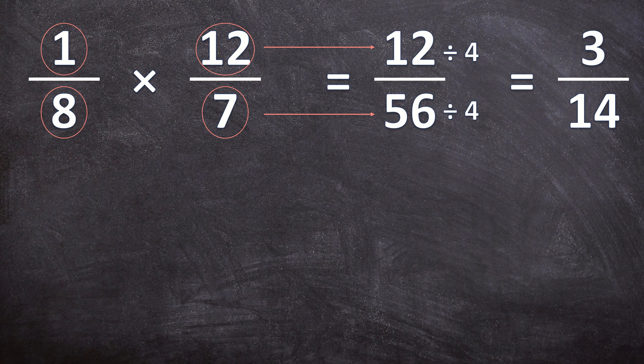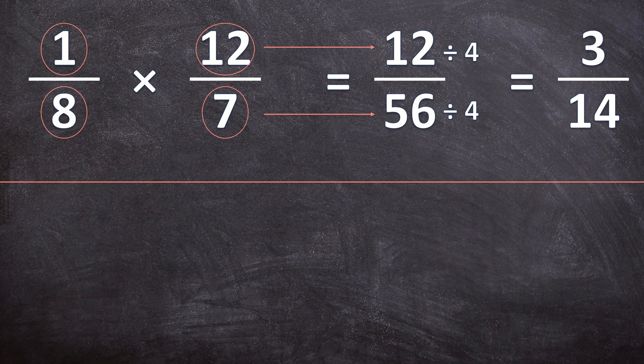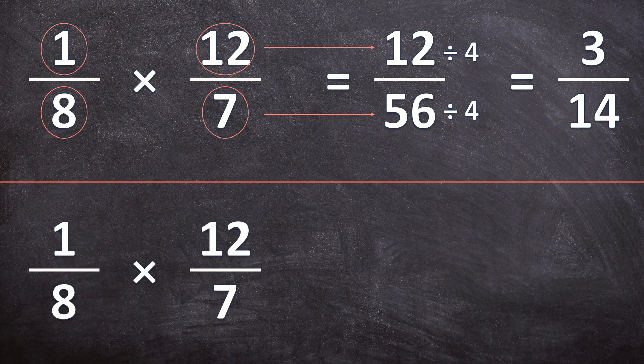But like I showed you in a previous video, there's also another method on how I can multiply. For the first method, I multiply the fractions, then I simplify the answers. For the second method, I'm going to simplify the fractions and then multiply. So let's have a look. We have exactly the same example. But before we multiply, we are going to do cross cancellation.